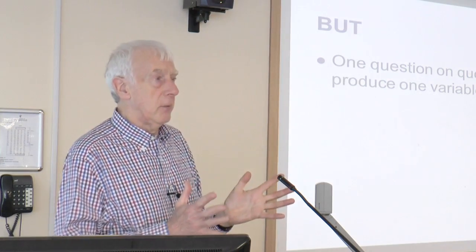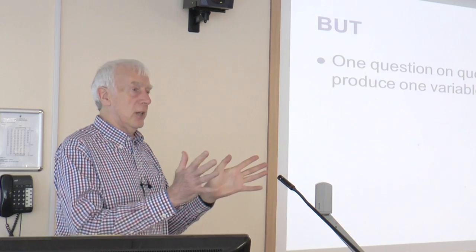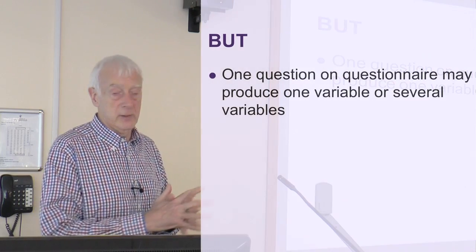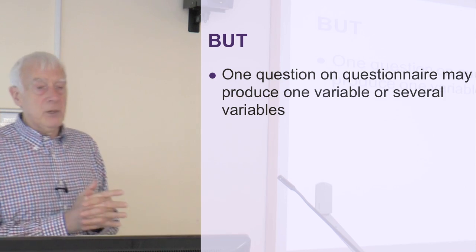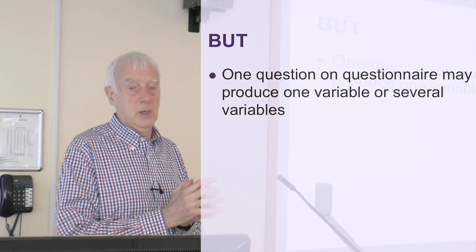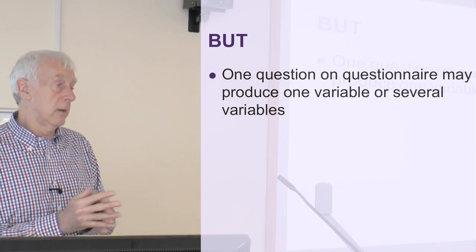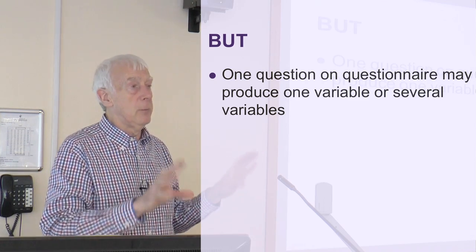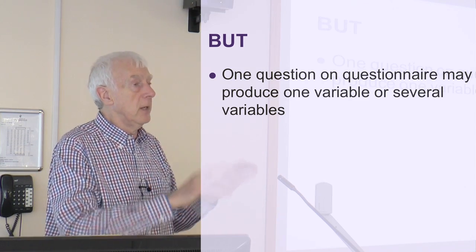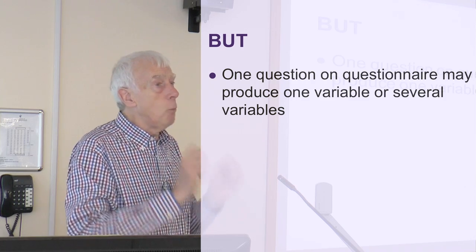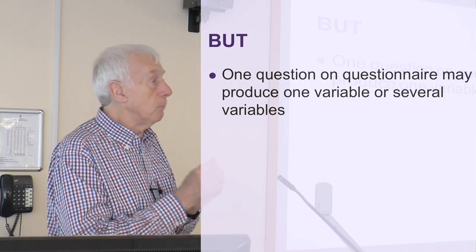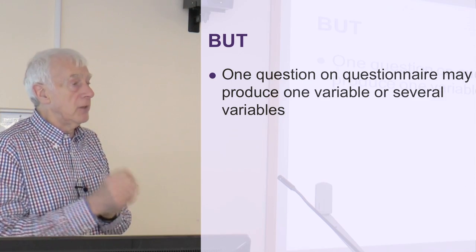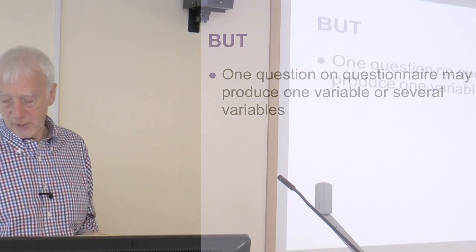So far it's a fairly simple example — there's a question, there's some data, and we've converted it into a number, and there are various ways of doing that. But sometimes it's not so obvious. Sometimes a question on a questionnaire, one numbered question, might produce more than one variable. In other words, we might not be able to represent the answers in one single number — we might need more than one number. So what we have to do is produce several variables to represent that one question.